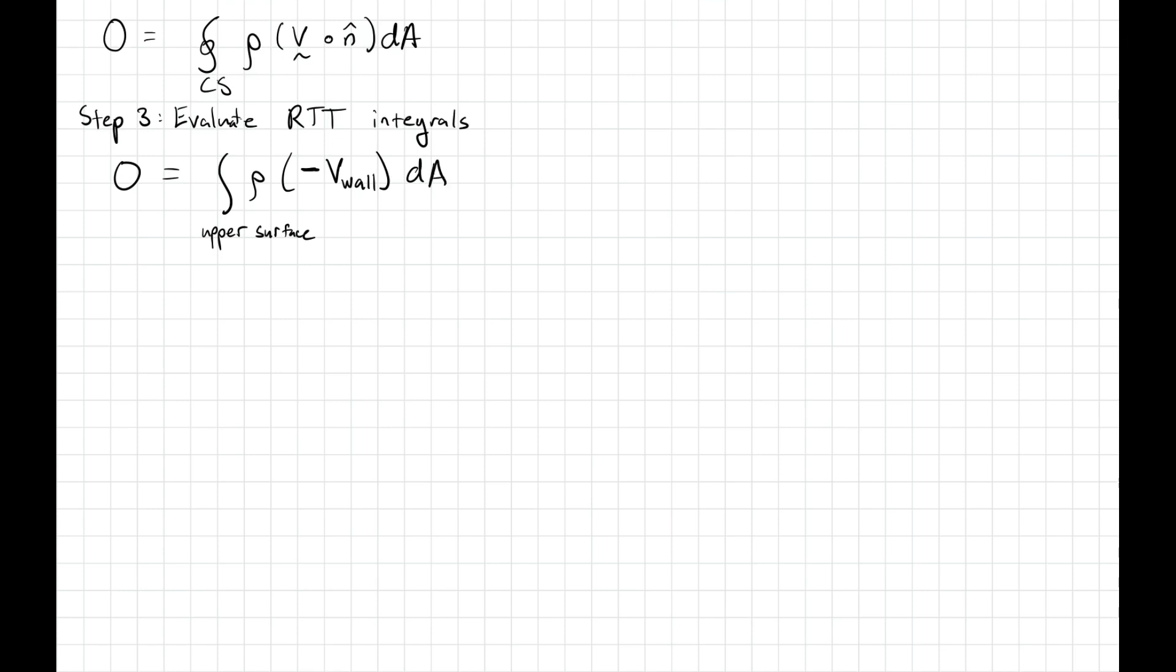But in this case, V dot N, note that the unit normal is facing outward, but the fluid velocity which moves with our wall is moving downward. So V wall is moving downward, but our outward facing unit normal is upward. And so there's a minus sign that results from the V dot N term.